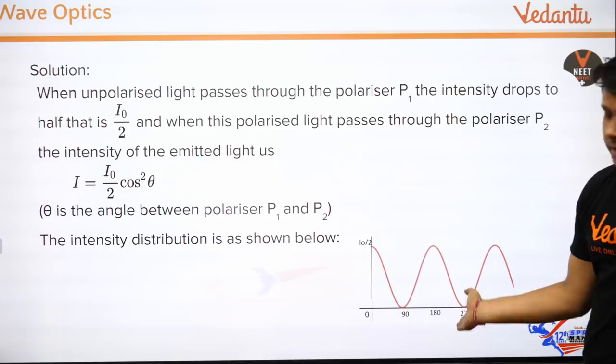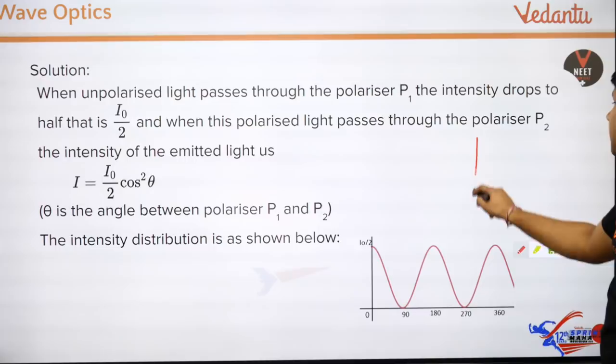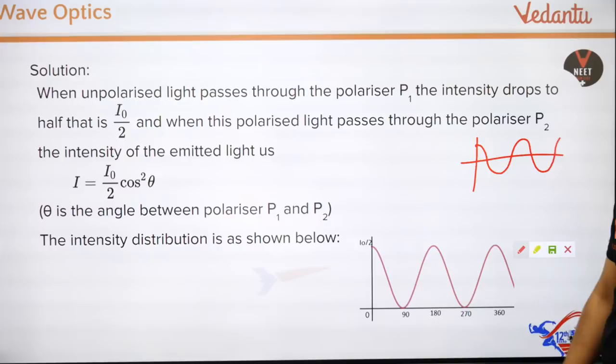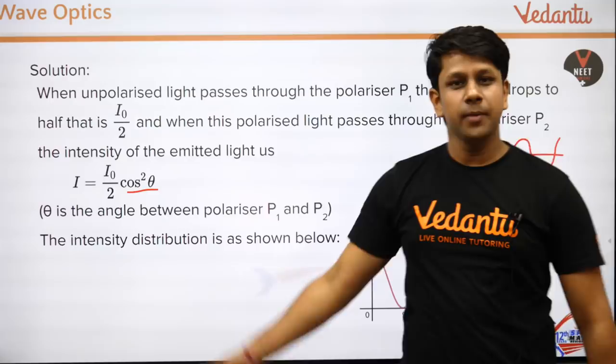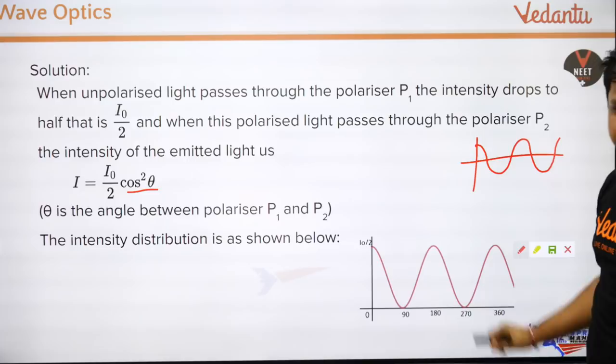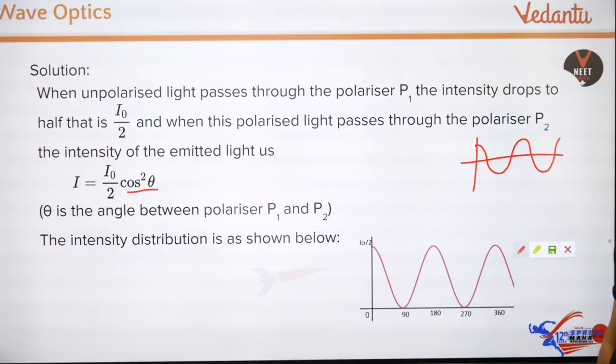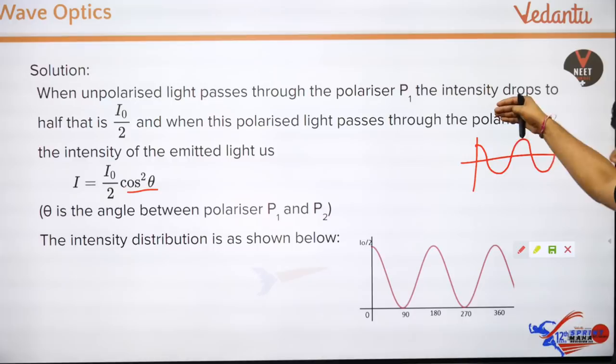If you plot I vs θ for this formula, cos²θ graph is always positive (unlike cosθ which oscillates above and below). Squaring the cosine makes everything positive, so the entire graph shifts above the axis. The amplitude of the graph effectively doubles in frequency compared to cosθ. This is what the cos²θ intensity graph looks like — always non-negative, oscillating above the x-axis.